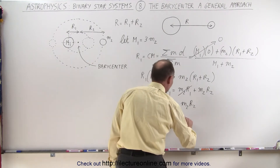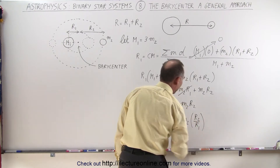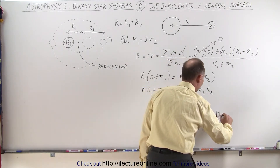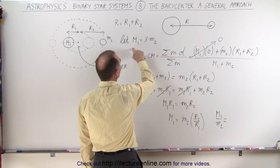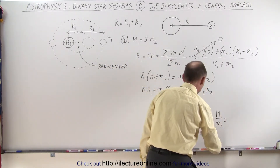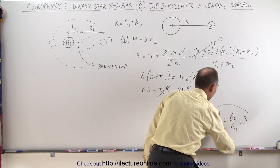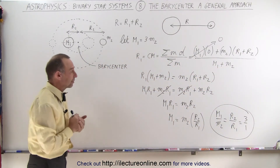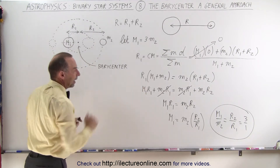We can then write that M1 equals M2 times the ratio R2 over R1. Moving M2 over, the ratio M1 over M2 equals R2 over R1. Since M1 is three times M2, M1 divided by M2 equals 3, which means R2 divided by R1 is also 3 to 1. So we knew M1 was three times the mass of M2, which means R2 must be three times the distance of R1, as we just discovered.